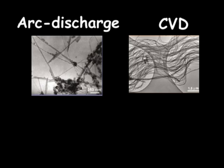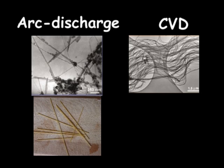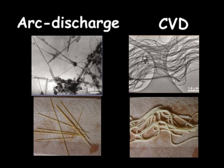Nicole gave me a great example. Nanotubes look like spaghetti. When they are produced by arc discharge they look uncooked. When they are produced by CVD they look cooked.